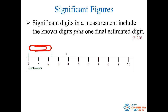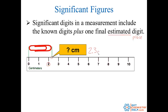So for example let's say we have this lovely red paper clip here. We can see the ones place clearly — we know the 2. But we have to estimate one more, a final estimated digit. In this case I'm going to estimate about 0.3, so I'd write that 2.3 centimeters. Maybe you think it's 2.4 centimeters — that's okay too because this last digit is estimated. We all agreed on the ones place because that was clearly marked on the ruler.